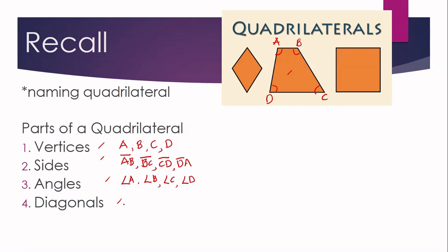Lastly, we also have the diagonals. A diagonal is defined as a line segment that joins two non-consecutive vertices. The non-consecutive vertices here are point A and point C, and if we join these two, the line segment formed is line segment AC — that is a diagonal. We also have another diagonal: if we join vertices B and D, the line segment formed is diagonal BD.